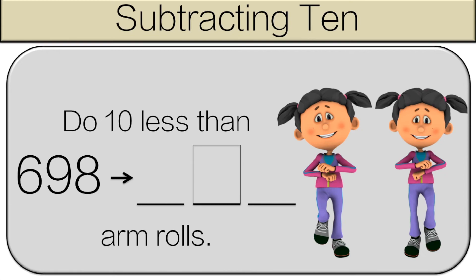What is 10 less than 698? The answer is 688. An 8 is in the box. So do 8 arm rolls.